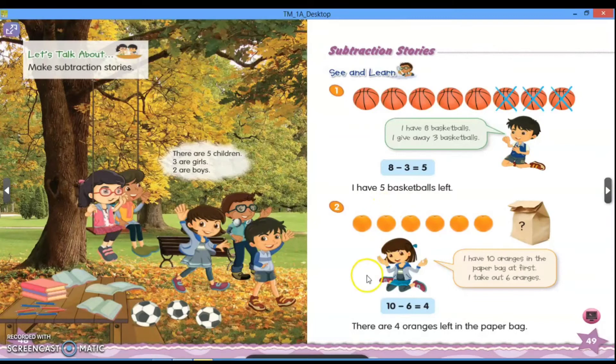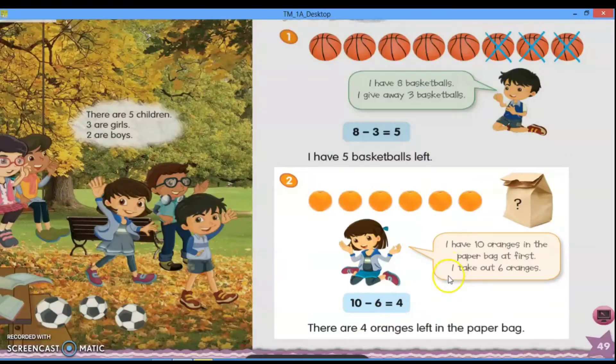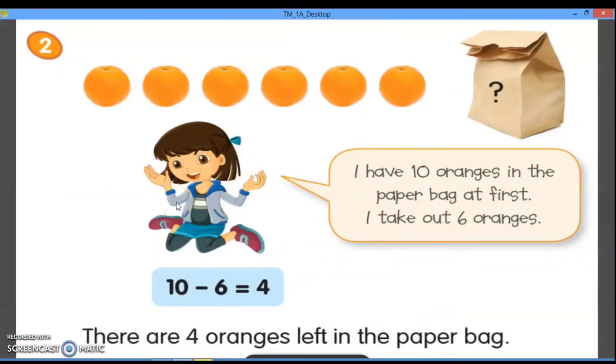Okay, kita lihat sekarang, subtraction stories number two. Ada Janice. I have ten oranges in the paper bag at first. I take out six oranges. Jadi, Janice punya sepuluh jeruk di paper bagnya.